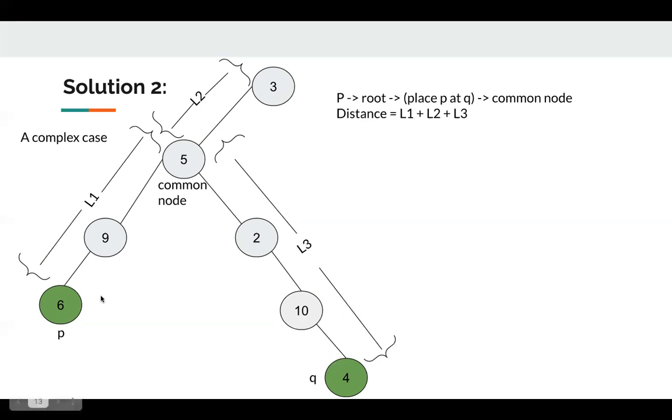So if we start from node P, node P goes to root node first. When it's reaching the root node, we place P at Q, then ask it to go to common node, so the distance is L1 plus L2 then plus L3.